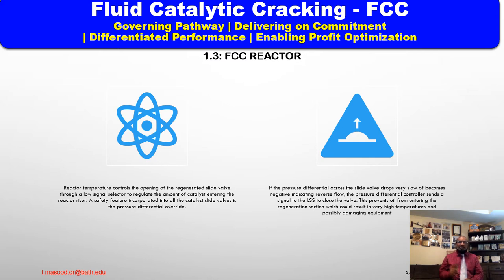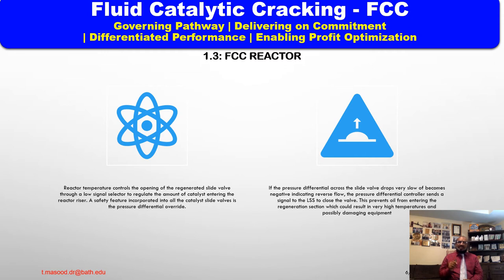The raw oil is mixed with atomizing steam at each of the feed distributors. This mixture is then injected into the riser approximately 0.7 meters (about 23 feet) above the lift gas nozzles, where it meets the hot recirculating catalyst. The oil is immediately vaporized, with the resulting pressure increase forcing the catalyst and vapor mixture up the riser to the reactor vessel. Cracking reactions take place in the 2 to 3 seconds required for the catalyst and hydrocarbon vapor to reach the top of the riser.